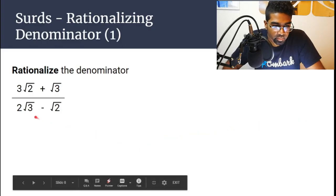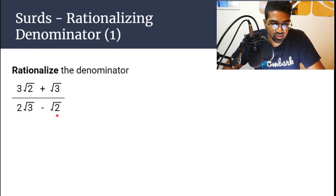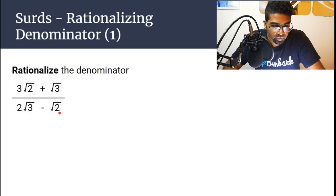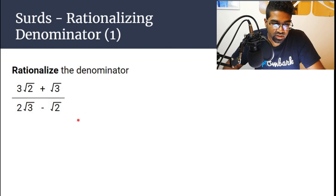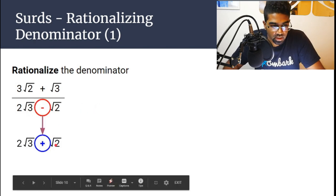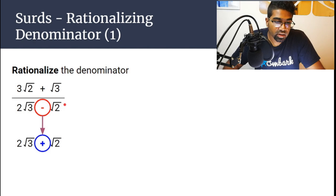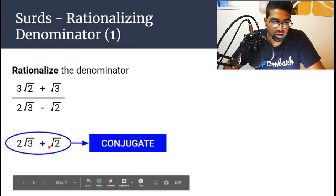Conjugates. Let's look at the denominator here. When we have an expression like 2√3 minus √2, the conjugate is obtained by changing the sign. So the conjugate of 2√3 minus √2 is 2√3 plus √2. That is the conjugate.